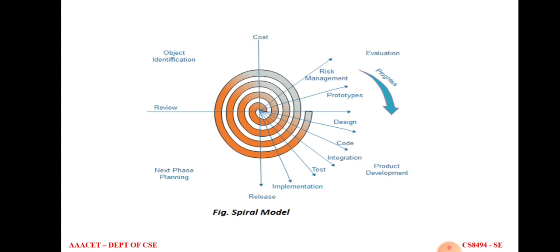The diagrammatic representation of the spiral model has four parts: object identification, evaluation, product development, and next phase planning. It is called a spiral model because it is a combination of incremental and iterative fashion — the same process is repeated at multiple times in a spiral form for each phase: requirements analysis, design, coding, testing, and maintenance.